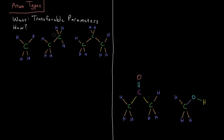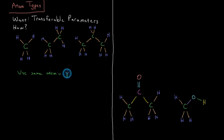For example, here I've got methane, ethane, and propane. In each case they're all sp3, they're all unsaturated, they're all only bonded to hydrogens which are only bonded to them. So you might expect that the electronegativity, the polarization — all these carbon atoms are in fairly similar chemical environments, so maybe they behave fairly similarly under simulation conditions.